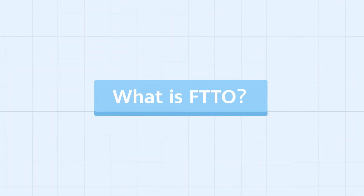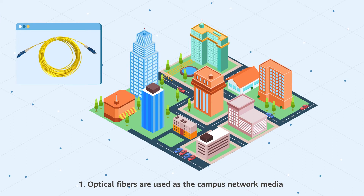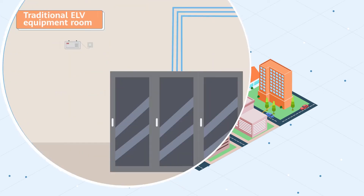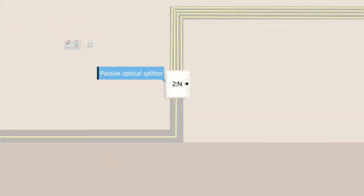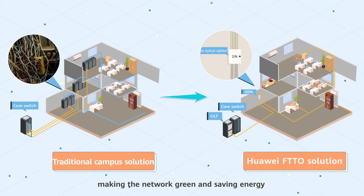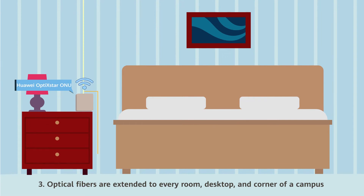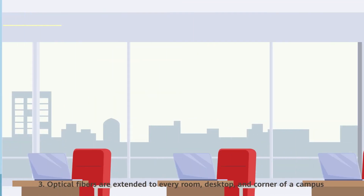So what is FTTO? The Huawei FTTO solution has the following features. First, optical fibers are used as the campus network media. Second, passive splitters replace active aggregation switches, and the network architecture is changed from three layers to two layers, making the network green and saving energy. Third, optical fibers are extended to every room, desk, top, and corner of a campus.